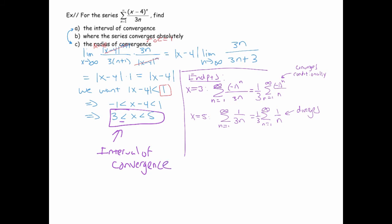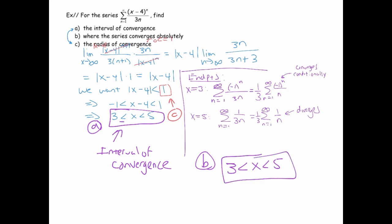The series converges absolutely everywhere on the interval except at the endpoint 3, where it converged conditionally but not absolutely. So the answer to where the series converges absolutely is the open interval excluding 3: strictly between 3 and 5. The radius of convergence is 1.